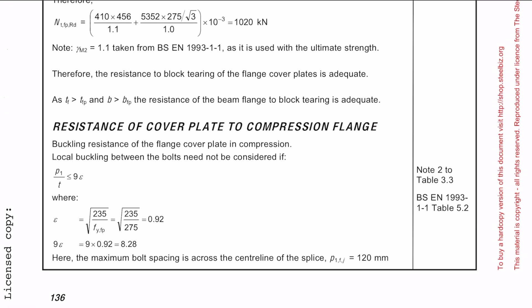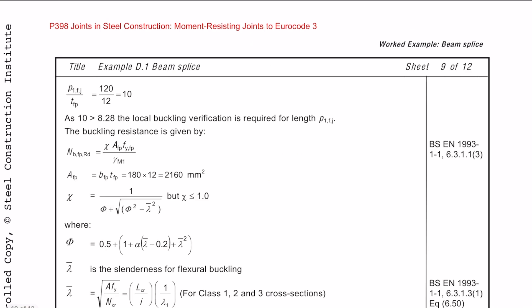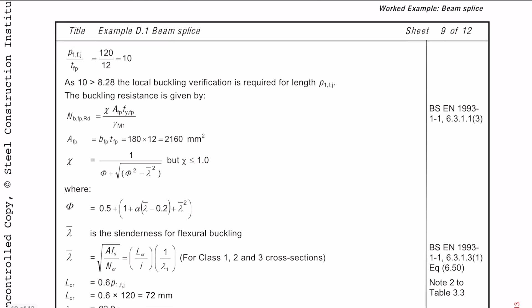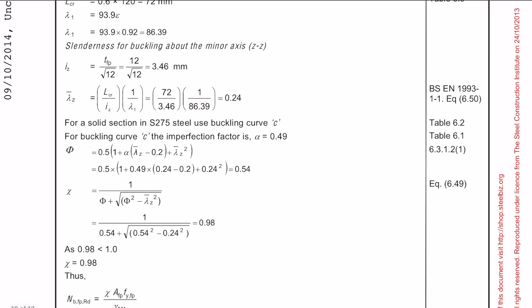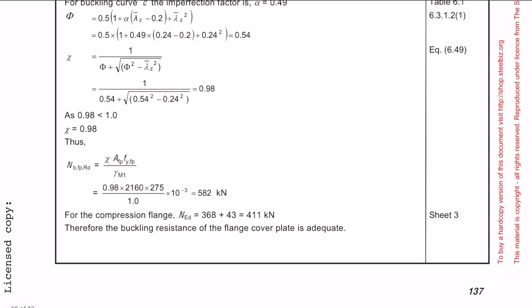Next, we need to check the cover plate due to compression forces. To see if we need to check for buckling, we need to satisfy this first equation. Once you've plugged the numbers in, you'll find that we do need to check for buckling. So like with all buckling checks to steel, this is no different. If you would like a more detailed explanation on how to calculate the buckling resistance, I've done a video on a simple steel column design which goes through buckling in a little bit more detail, so go check it out. I'll leave a link to the video in the description below.